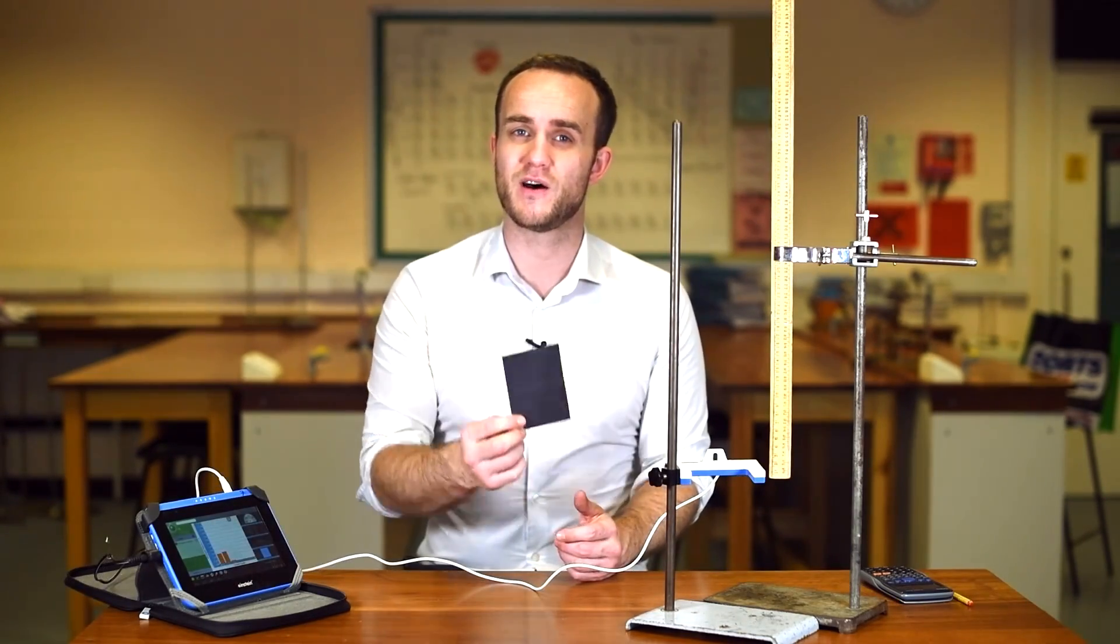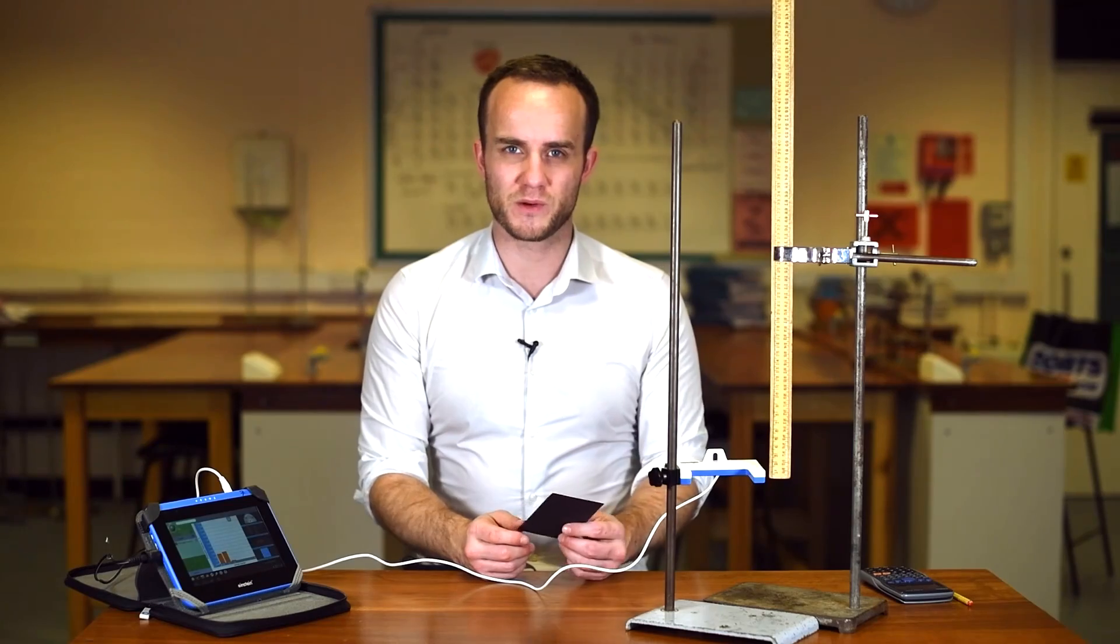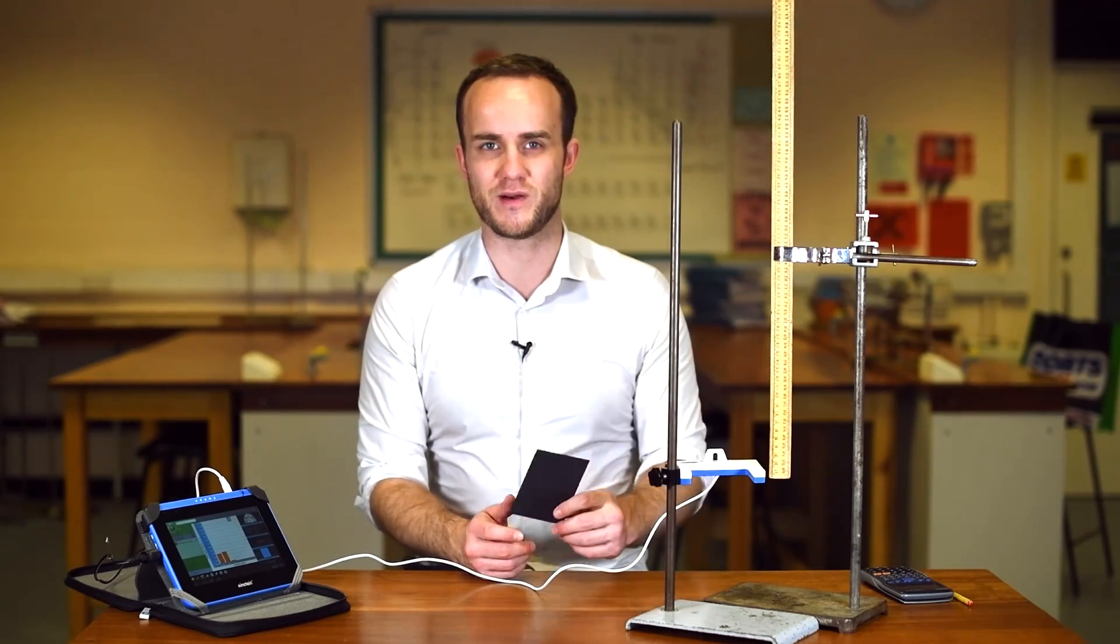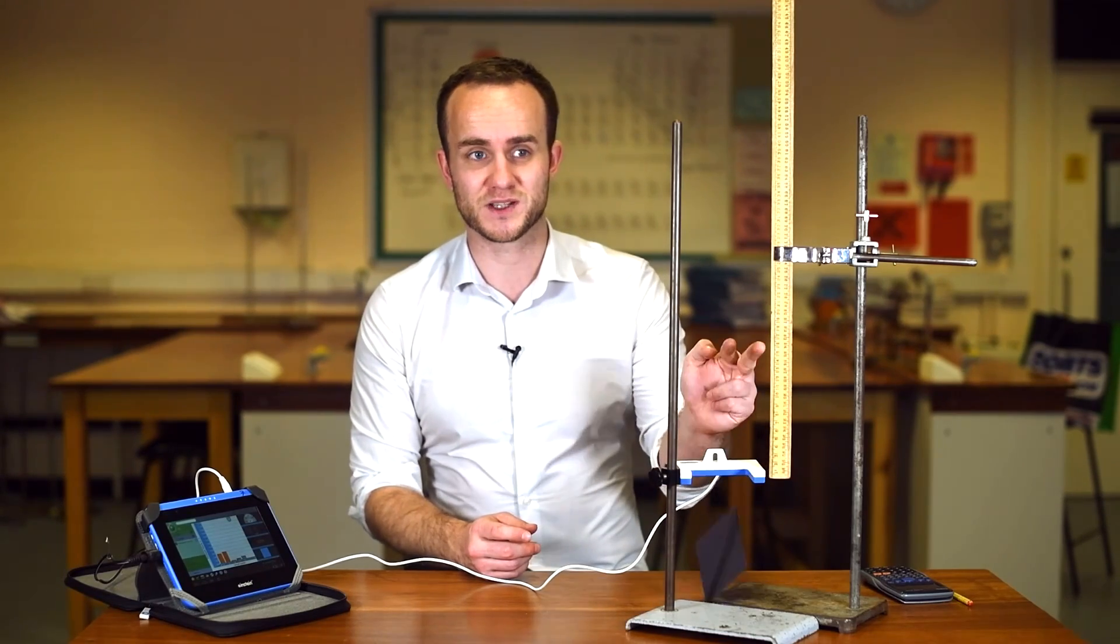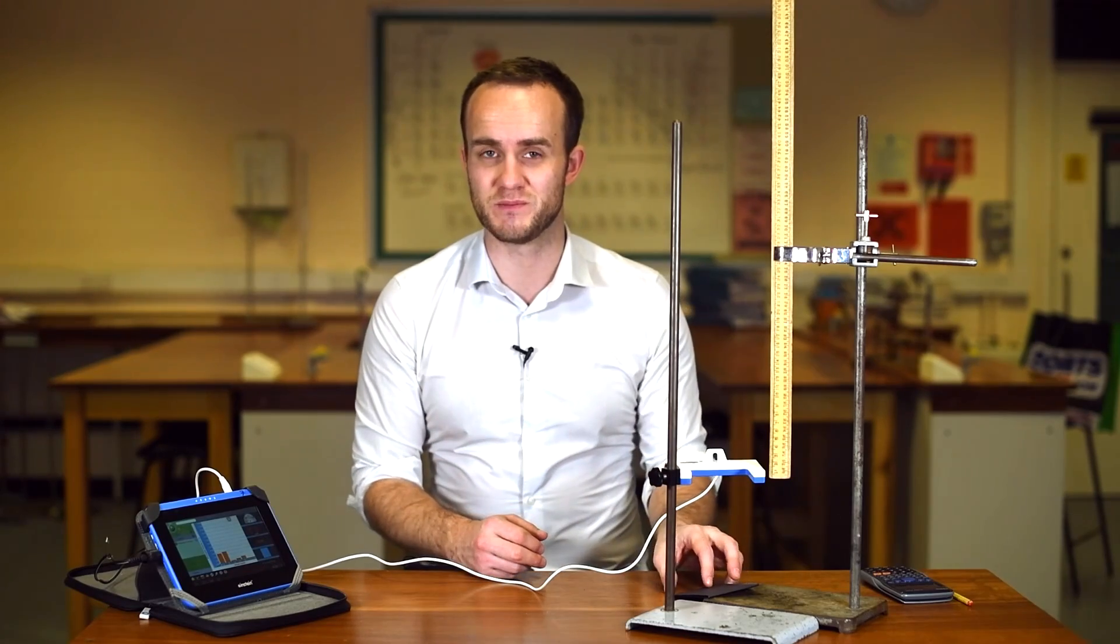Now you might be able to see that I put a line halfway up the card as well. What we're going to be doing is dropping this card from various heights and I have my light gate here. I've obviously put it high enough off the table that my card can pass through and hit the ground without bouncing back up and crossing the beam again.